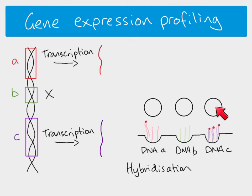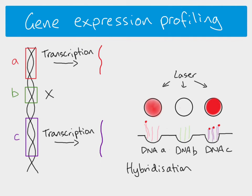We then look at the wells again under a laser. In the well for gene A we get red fluorescence because hybridization occurred. In the well for gene C, we also get red fluorescence, but at a much higher intensity because more hybridization occurred. There is nothing for gene B. So with the microarray, not only can we see which genes have been expressed, but also how much — the rate of expression — since the intensity of fluorescence for gene C is higher than for gene A.